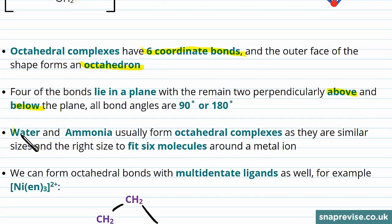Examples of ligands that form octahedral complexes are water and ammonia. And the reason they form octahedral complexes is because they are the right size to fit six molecules of them around a metal ion.